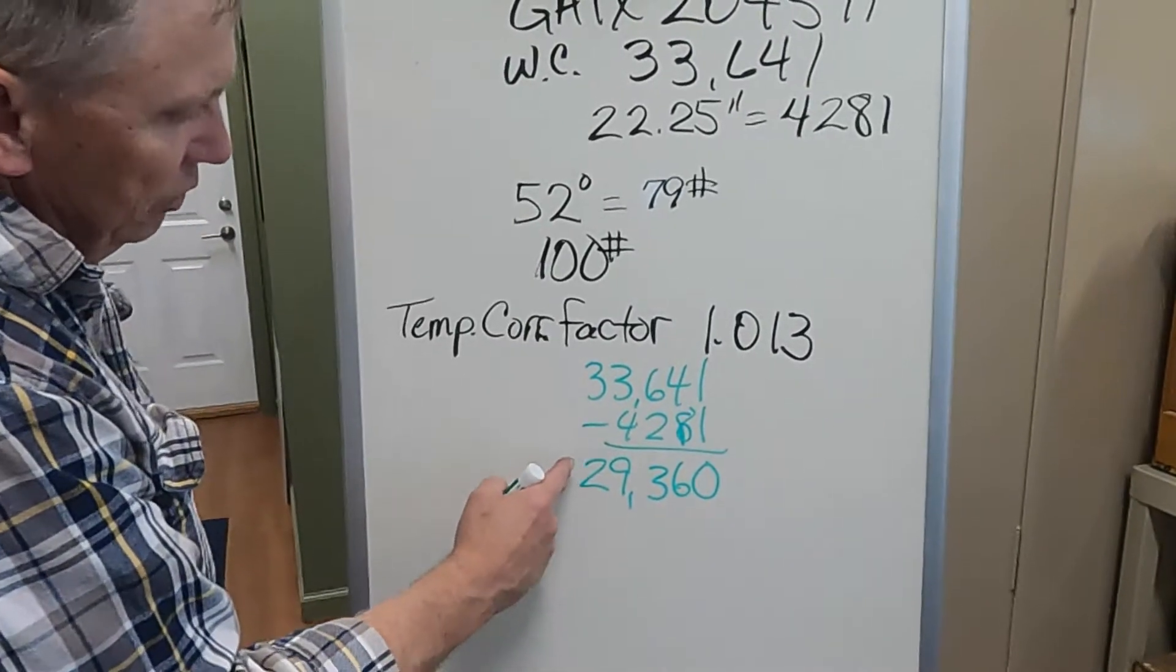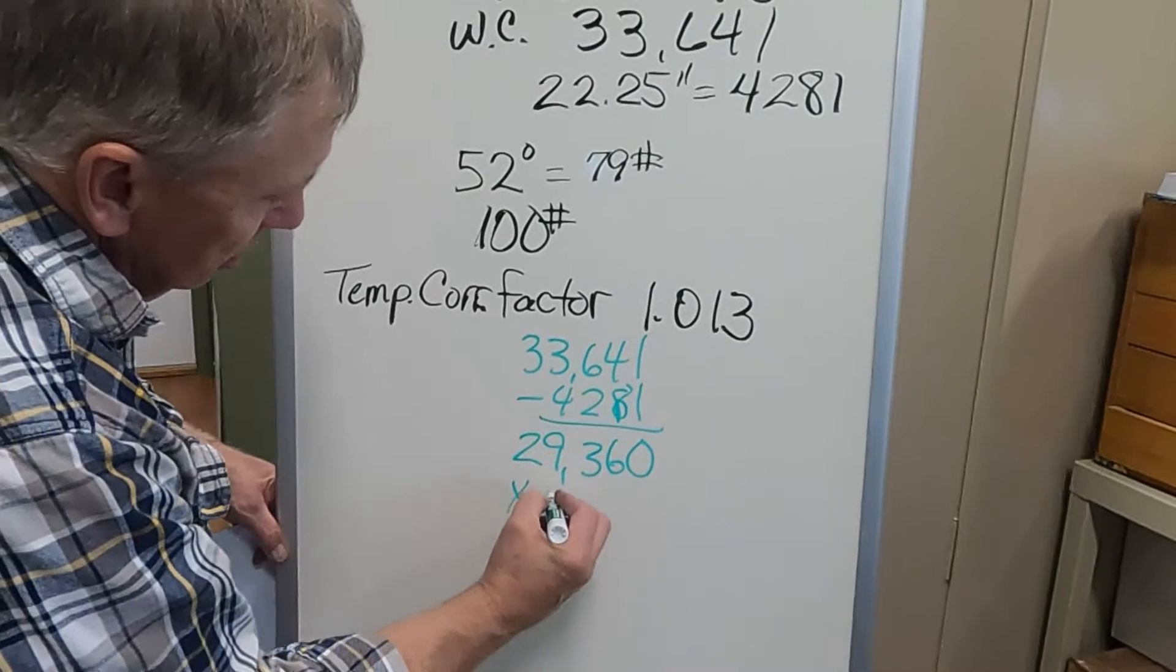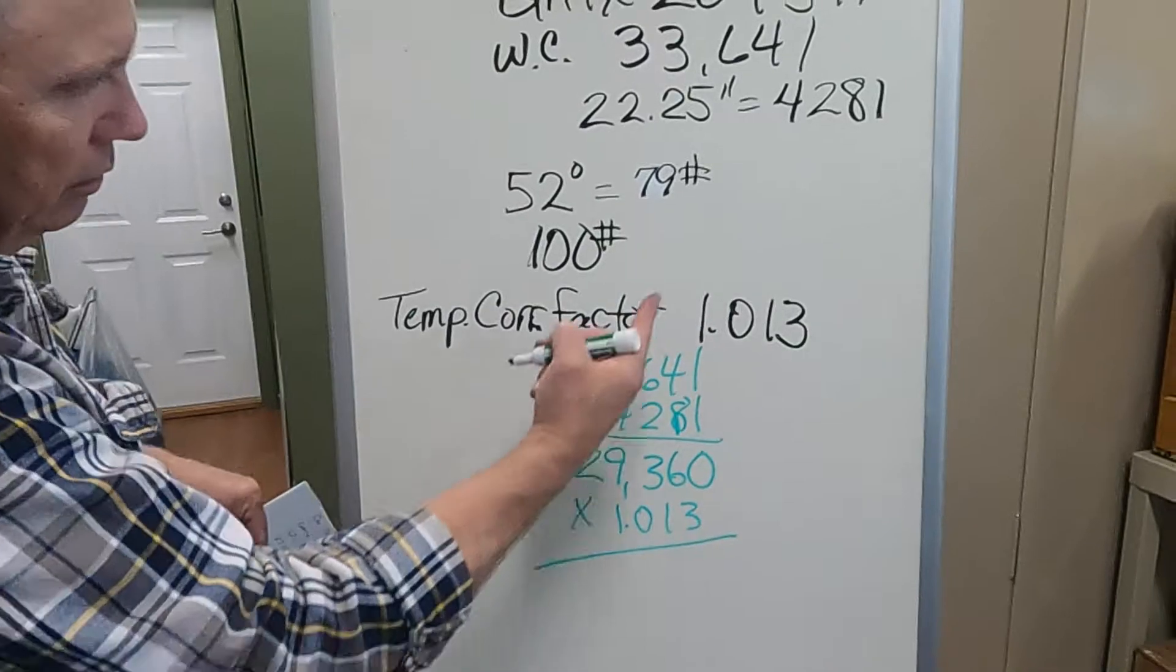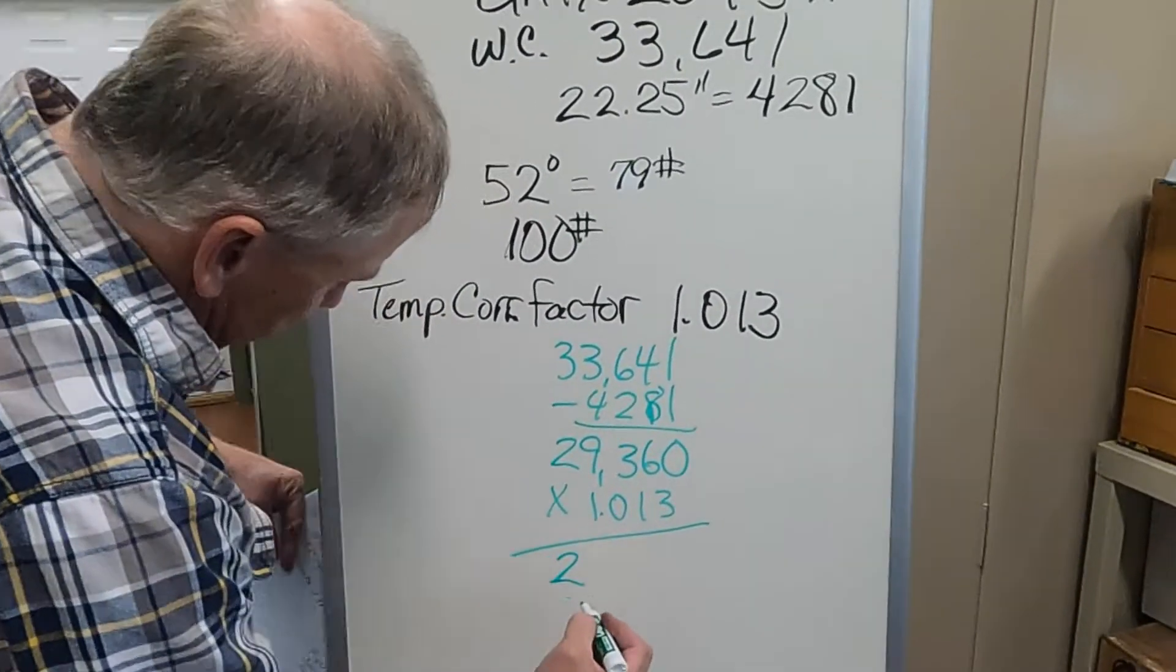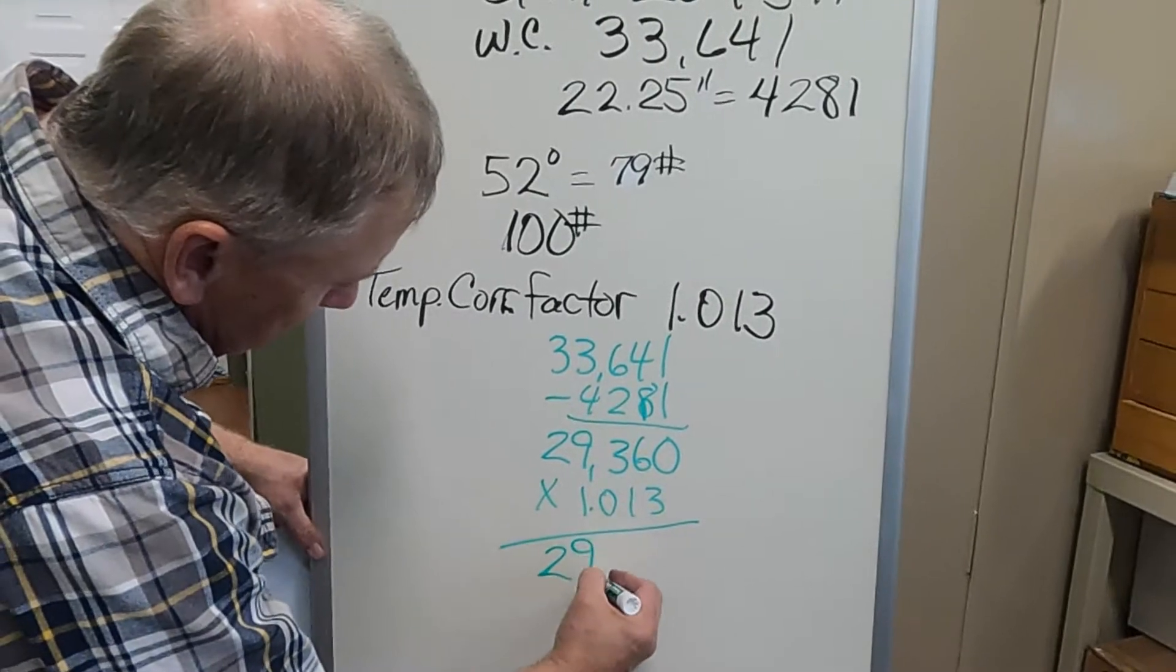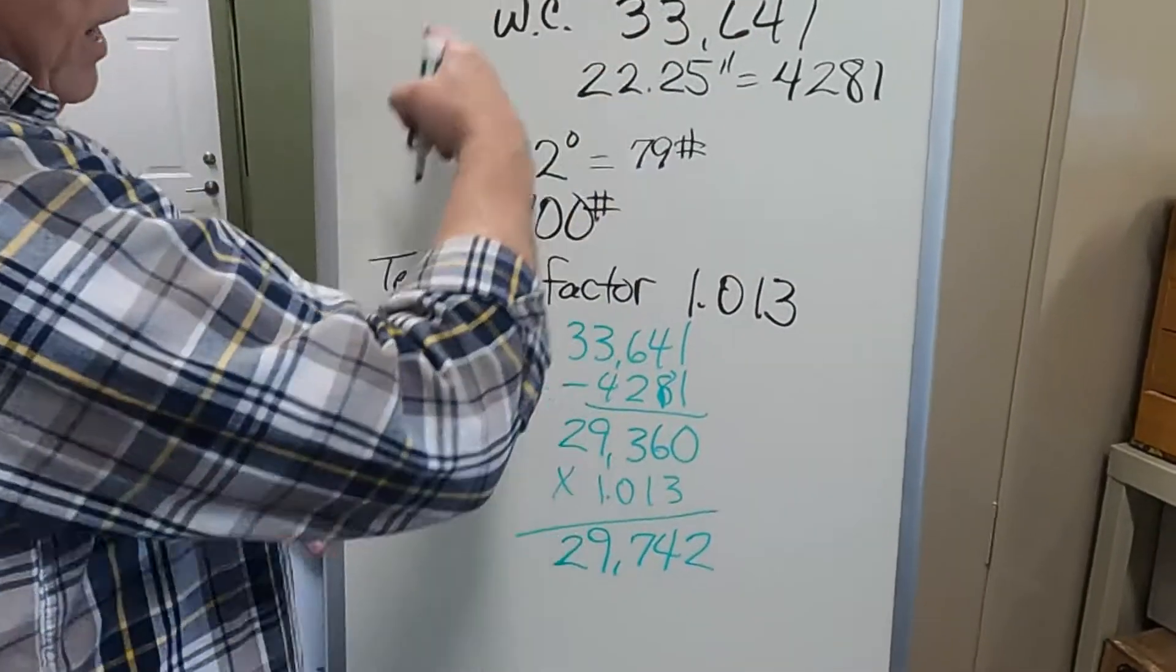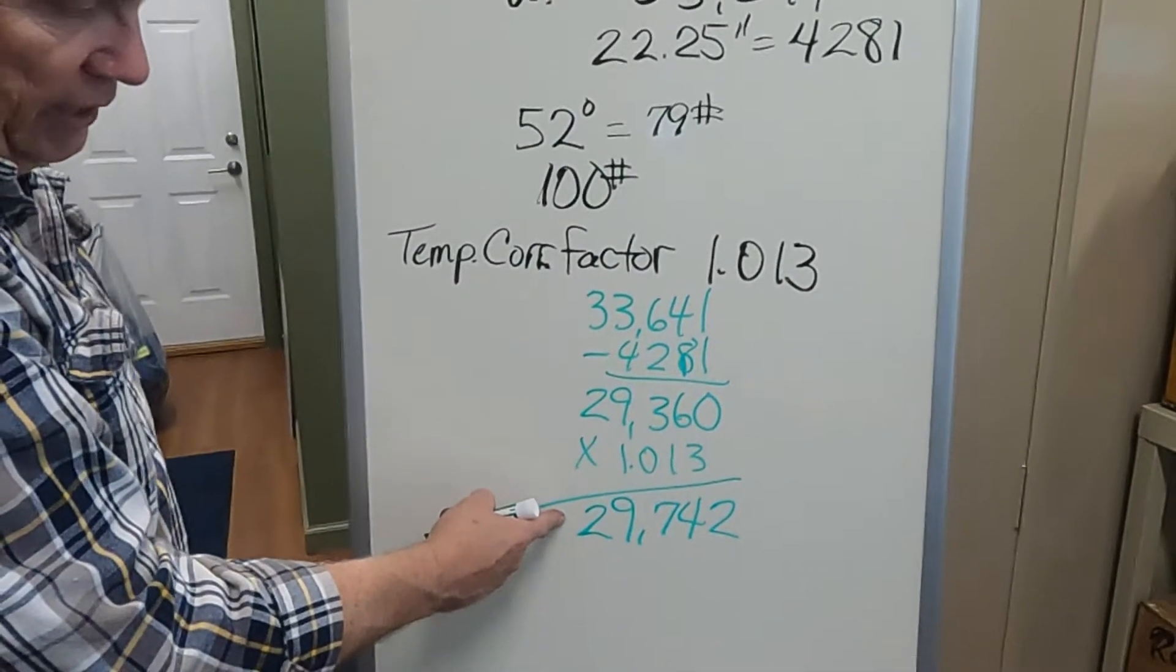leaves us with 29,360. Now we take 29,360 times 1.013. We get 29,742. That's what this rough calculation says, how many net gallons there should be.